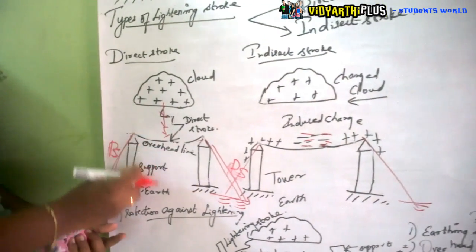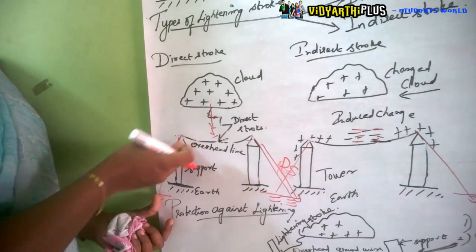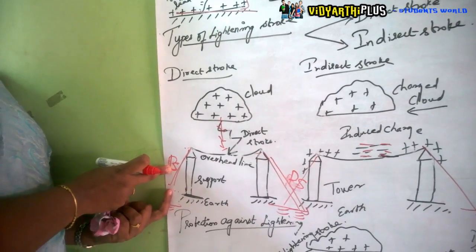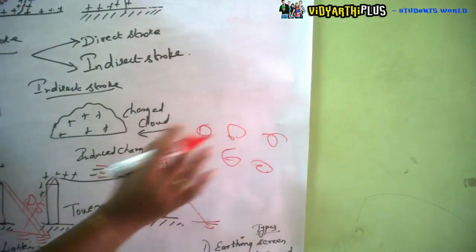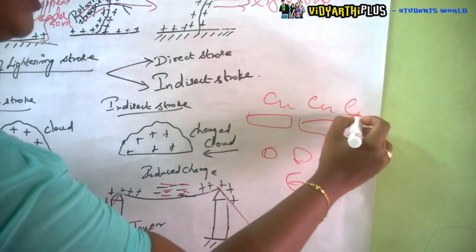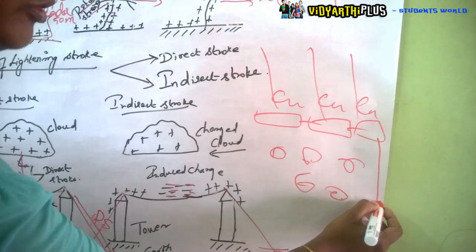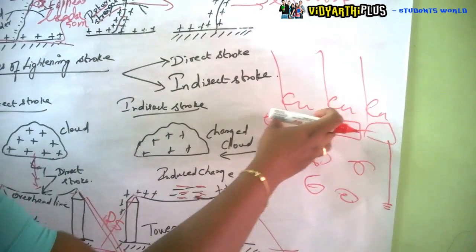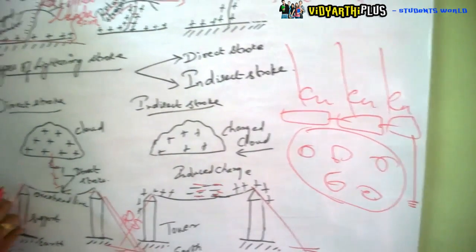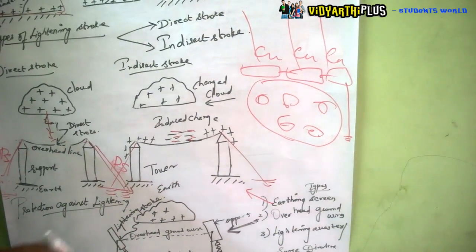The first method is the earthing screen. Since the tower is connected to power system components, any lightning charges reaching the overhead line would affect all components. To protect them, copper conductors are placed above the components. These copper conductors are interconnected and connected to the ground, so all lightning charges are absorbed by the copper conductors and directed to earth, completely protecting the power system components.